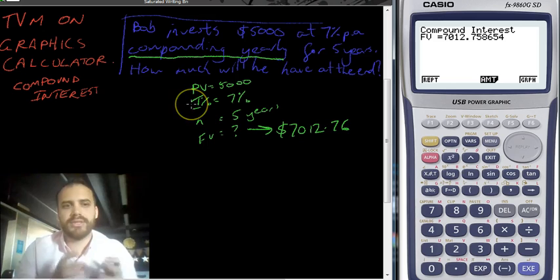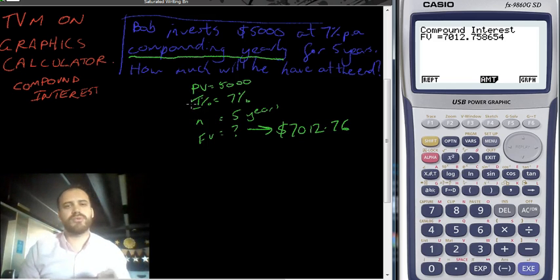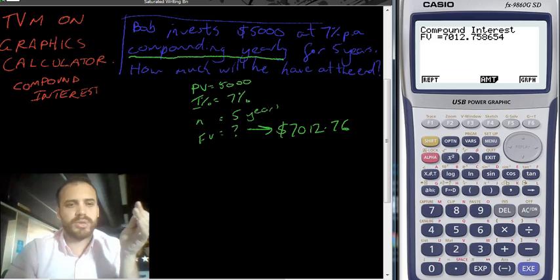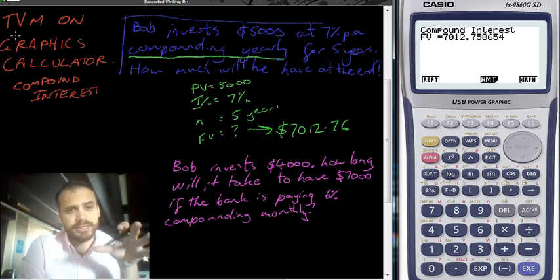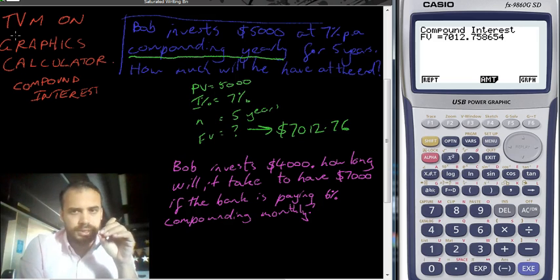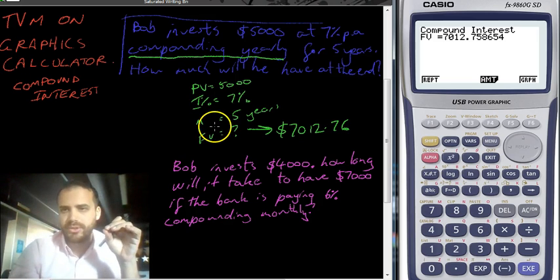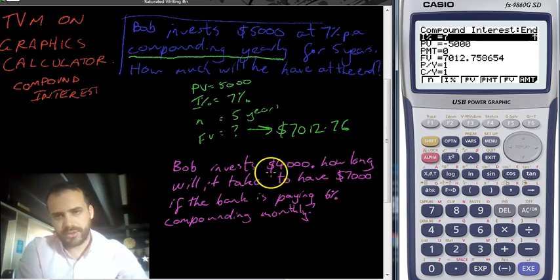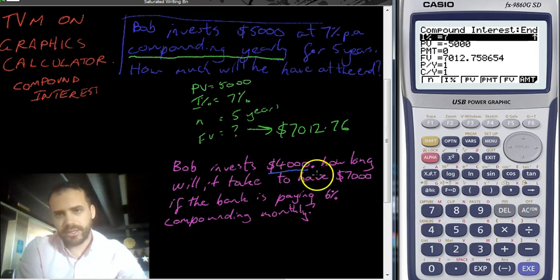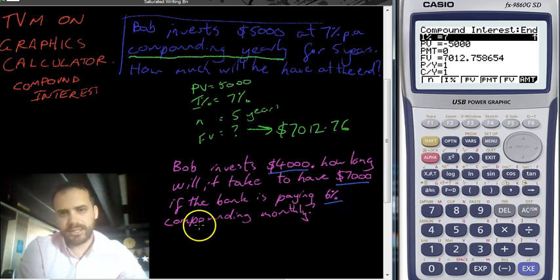All right, now this also allows you to solve a type of question that you haven't been able to solve before. So I'm just going to do one of those really quickly. This question is pretty much as complicated as it gets. So take your time. Think about what's going on here. All right, question. Bob invests $4,000. How long will it take to have $7,000 if the bank is paying 6% compounding monthly? So important pieces of information here.